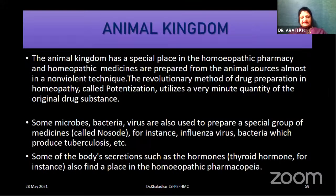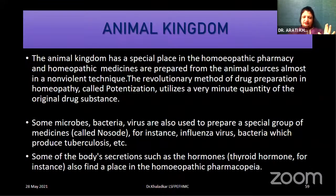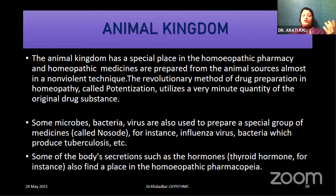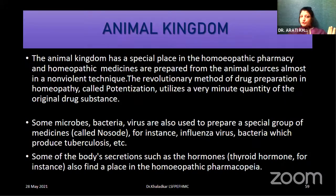Now we go on to the next important kingdom. We have finished with the vegetable kingdom. Now we go on to the animal kingdom. The animal kingdom has its own place, because it includes certain microbes, bacteria, viruses, nosodes, sarcodes, ophiotoxins, and the lac group. We have the whole animal, animal secretions, etc. The revolutionary method of drug preparation — potentization — is always unique for all kingdoms.